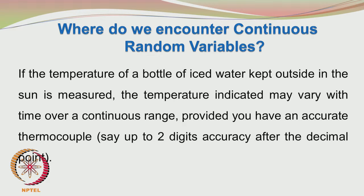Another example of continuous random variables is the heating of water kept outside in the sun. Let us take a bottle of water from the fridge, which may be around 10 or 15 degrees centigrade, and then keep it out in the sun. The temperature will increase, and if you measure it with a thermocouple, it can show values anywhere between 15 degrees to 35 or 40 degrees centigrade. These values are continuous; the thermocouple, depending on accuracy, may report up to 2 decimal places.